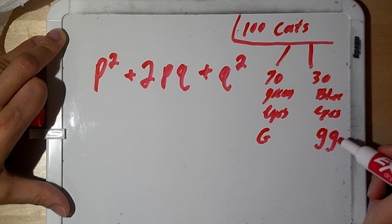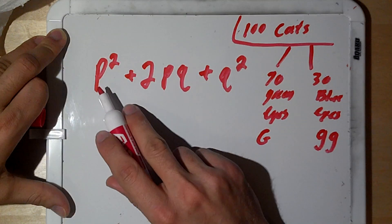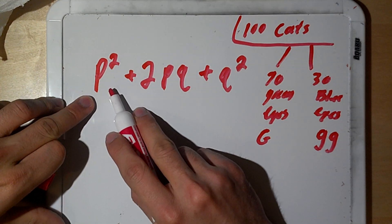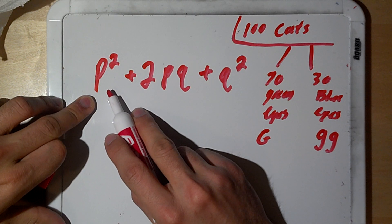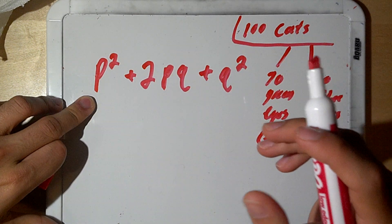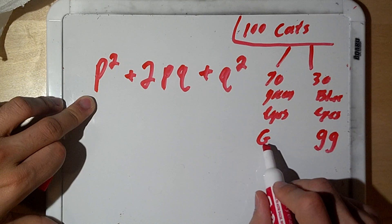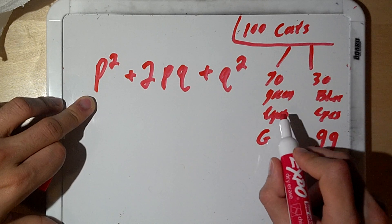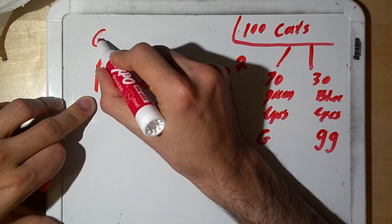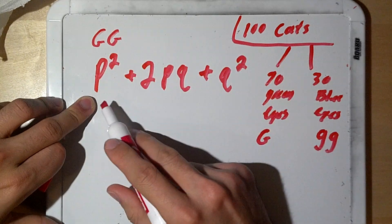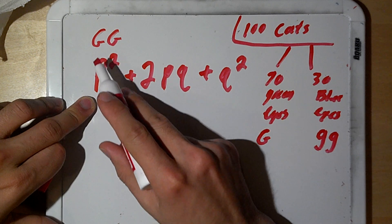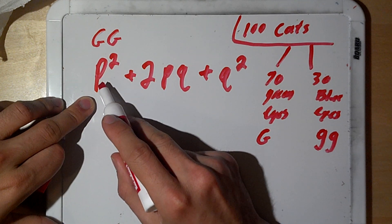So, based on that information, let's go back to this. So, p², what p² is going to resemble, it's going to resemble the homozygous dominant individuals within the population. So, those who have green eyes but have capital G, capital G, will be represented by p². So, their allele frequency is represented by p².